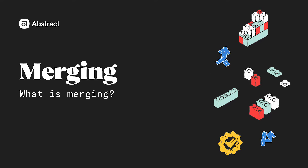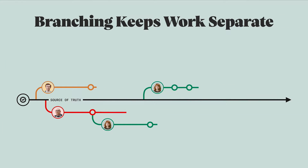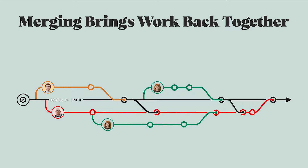Let's start by discussing what merging is and what it does with your files. Branches help you and your team keep your files and edits organized into distinct and separate lines of work. Merging allows you to bring those edits together into one place once the work is finished. Prior to using Abstract, many teams were merging files together, but they were doing it manually, mostly by copy and pasting between files. Merging in Abstract helps automate this process.